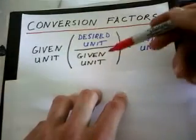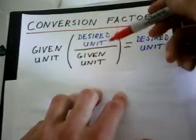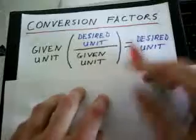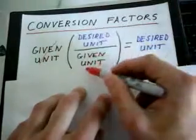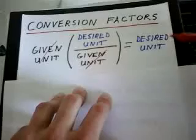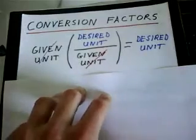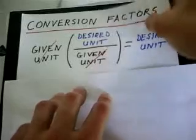In the conversion factor, we're going to divide by the given unit and we're going to multiply by the desired unit. Your given units will cancel and your final answer will carry the desired unit.